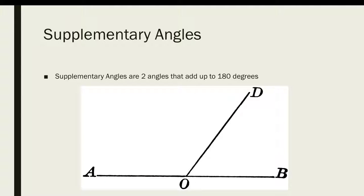Supplementary angles are two angles that add up to 180 degrees. In this case, angle AOD is supplementary to angle DOB. How can we see this? Because they add up to angle AOB, which is a flat line, which is 180 degrees.